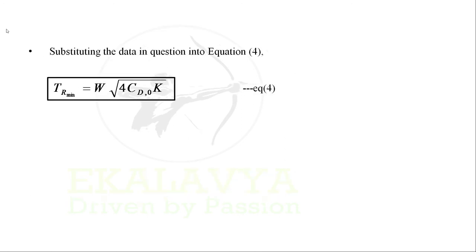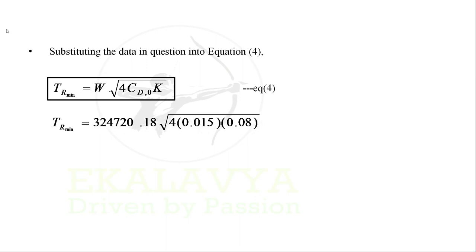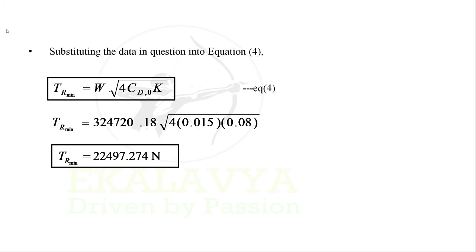Substituting the data into equation 4: weight as 324720.18 Newton, CD0 as 0.015, and k as 0.08, and simplifying, we get T_R minimum as 22497.274 Newton.